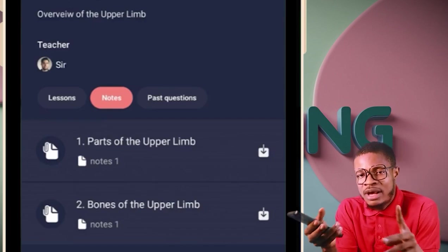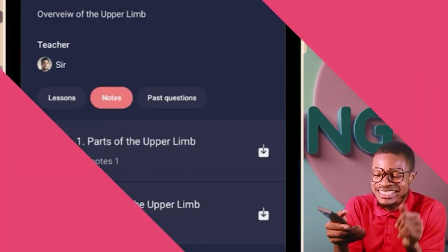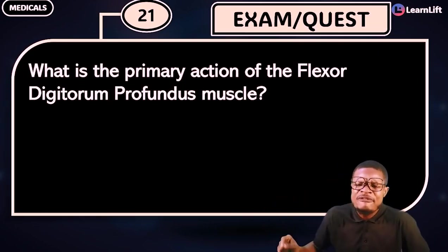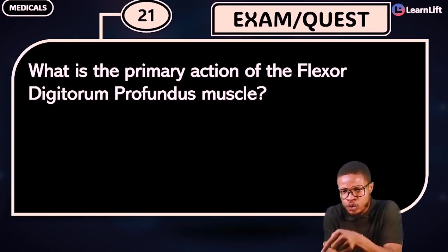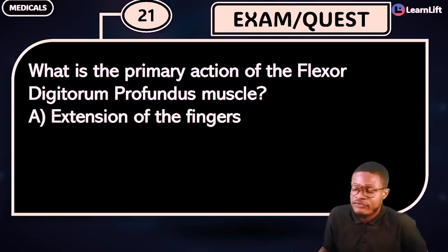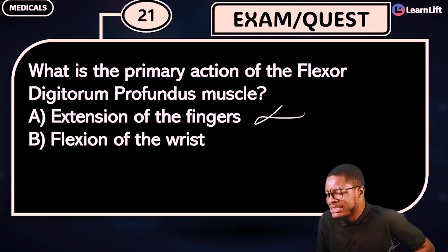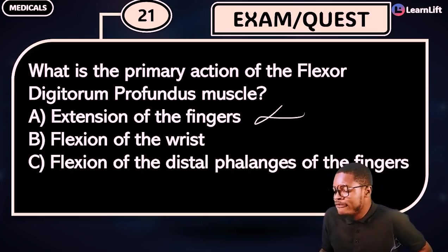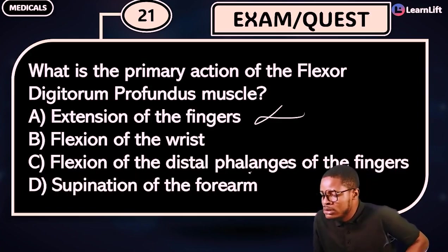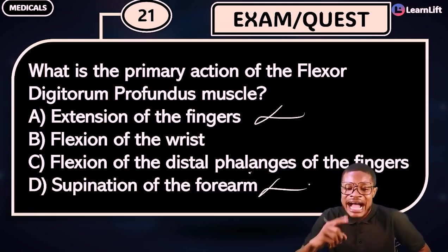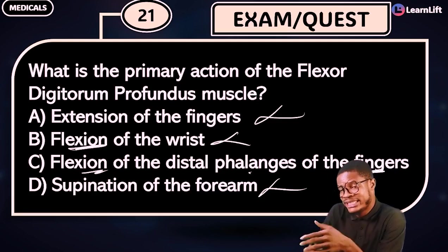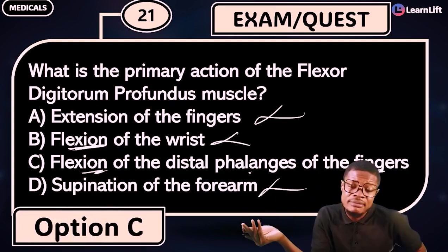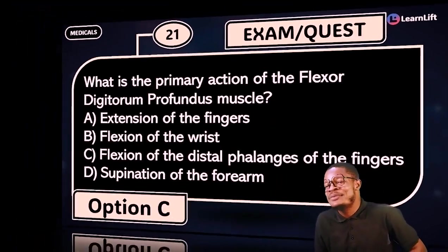The same structure you have for anatomy is available for physiology and biochemistry. Now, question 21: What is the primary action of the flexor digitorum profundus? Options: A) extension of the fingers, B) flexion of the wrist, C) flexion of the distal phalanx of the fingers, D) supination of the forearm. Since it's a flexor muscle acting on the digits, the answer is option C.